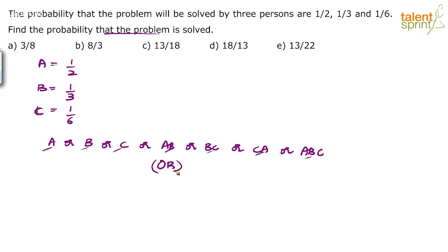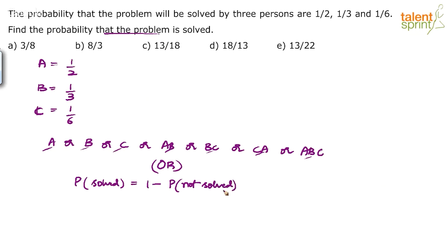Or if you want to avoid all this, you can simply say: probability that the problem gets solved equals 1 minus probability that the problem doesn't get solved. The problem is not solved in only one way — A should not solve, B should not solve, and C should not solve. All 3 of them should fail together. Then the problem is not solved.